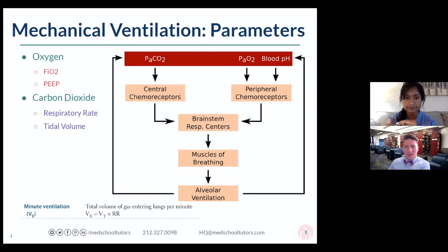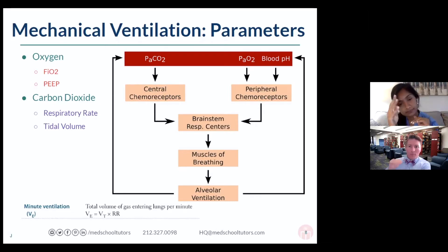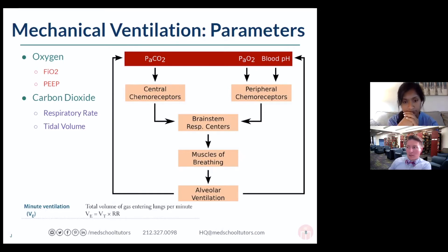Everybody at baseline is operating on what's called a hypercapnic drive. We keep CO2 exactly at 40. If it goes a little bit above 40, we start to hyperventilate a little bit to bring it down. If we breathe a little too fast and CO2 goes down, our brainstem tells us to stop breathing so much so we can pop right back up to 40. 40 is the number we're seeking for PaCO2, so we're going to be laser focused on that.